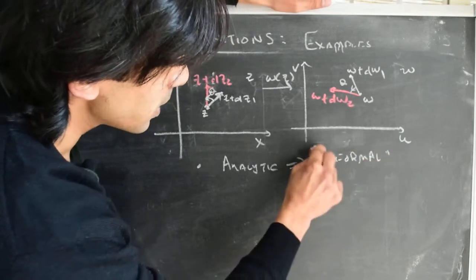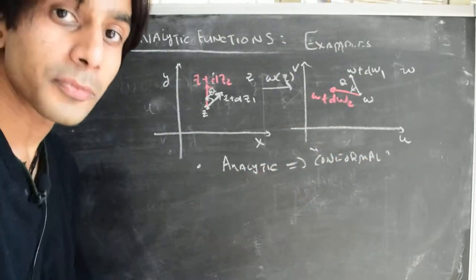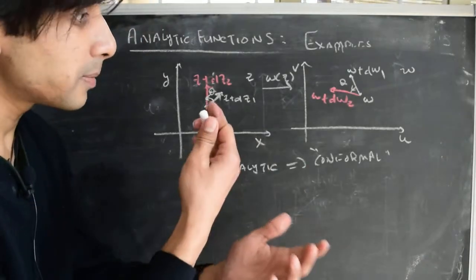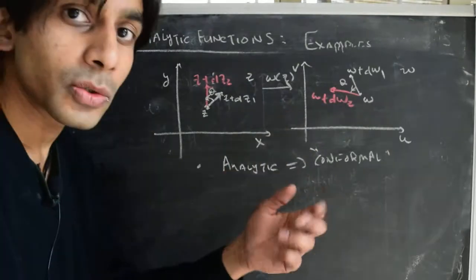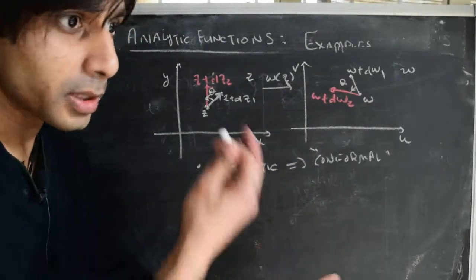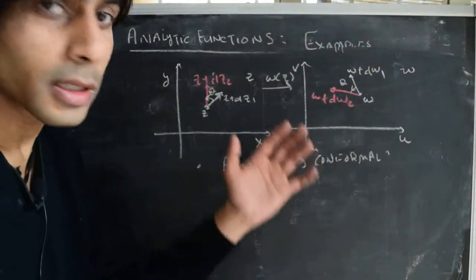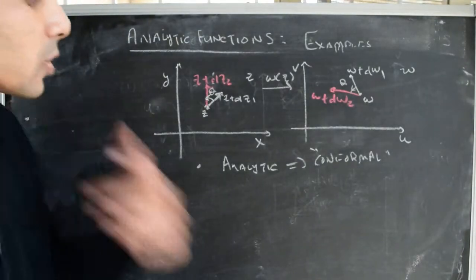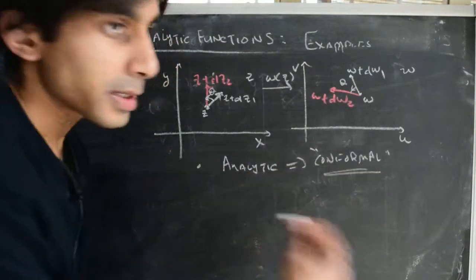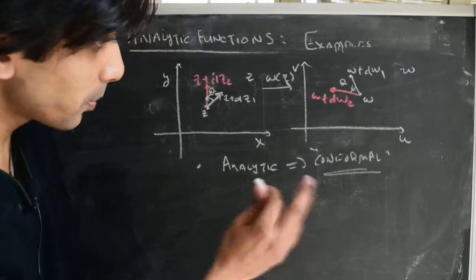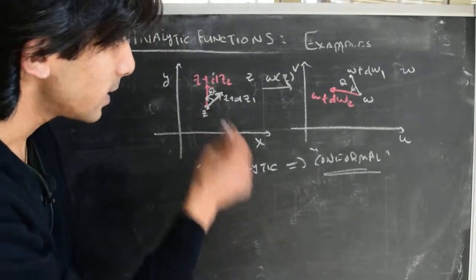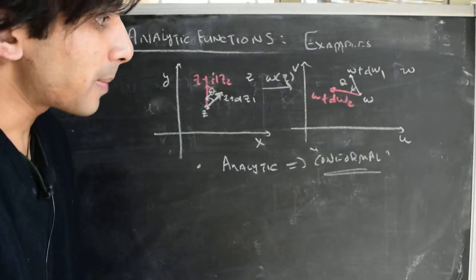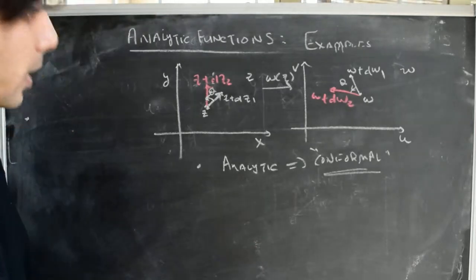We haven't talked much about conformal mappings, but from this we already get a sense of what a conformal mapping is: it's a mapping which preserves the angle between curves both in magnitude and direction at every point in the region being considered. Analytical mappings are conformal, and we'll talk more about conformal mappings in future videos. The important point is that the angle between infinitesimal vectors is preserved in a mapping from the z-plane to the w-plane.